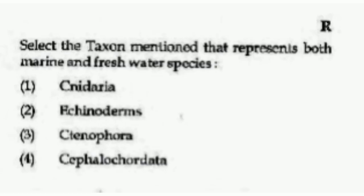Select the taxon that represents both marine and freshwater species — options are Cnidaria, Echinoderms, Ctenophora, or Cephalochordata. The correct answer is option number 1, Cnidaria.